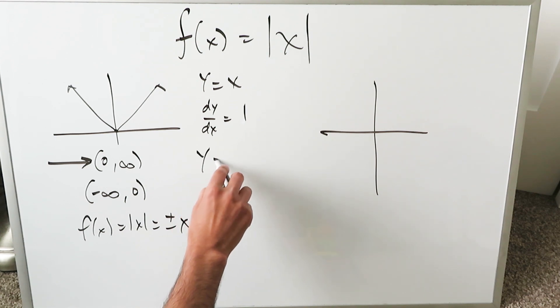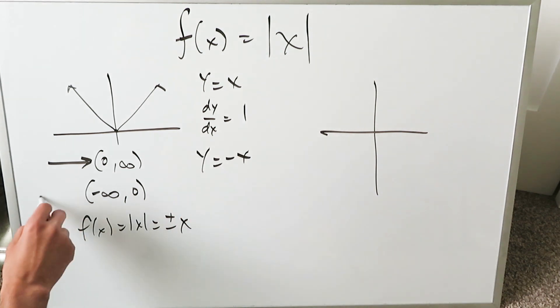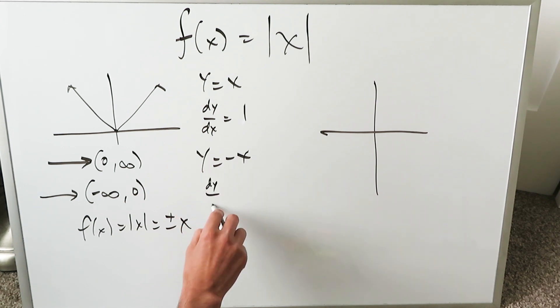Now let's look at y equals minus x, which is this part of the domain, minus infinity up to 0. If y equals minus x, dy/dx equals the derivative of that, which is minus 1. You're looking right over here.